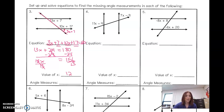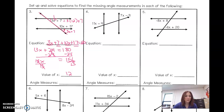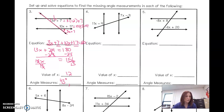Now for the angle measures. I'm going to substitute 12 in for x: 3 times 12 plus 7. Typing that into a calculator — 3 times 12 plus 7 is 43. So one angle measure is 43°. Remember, they're not congruent, so I do the other: 10 times 12 plus 17 is 137.